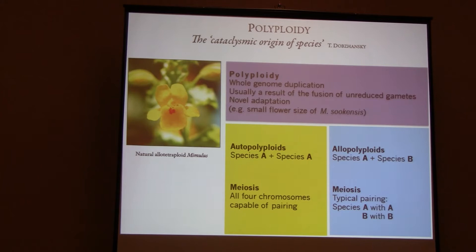Polyploidy is usually the result of a whole genome duplication — it's usually the result of the fusion of unreduced gametes. As noted by Dobzhansky, it usually results in new species.